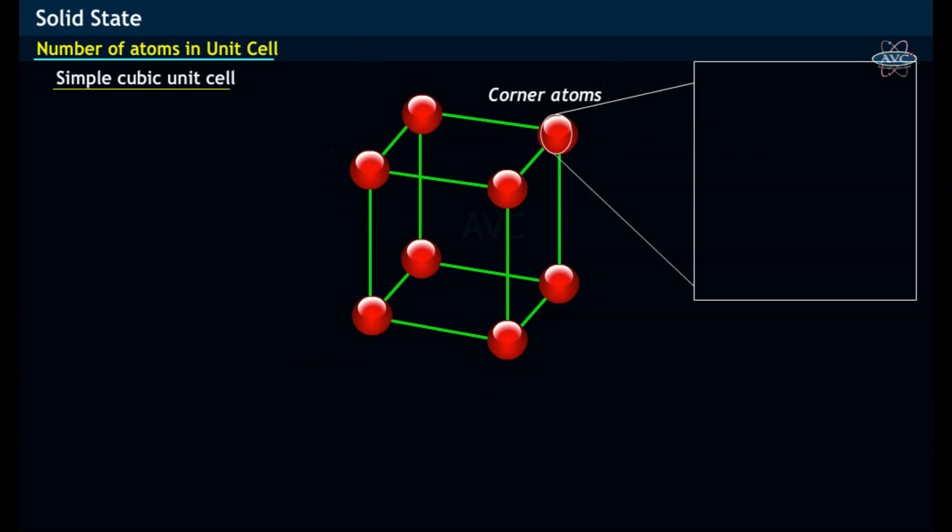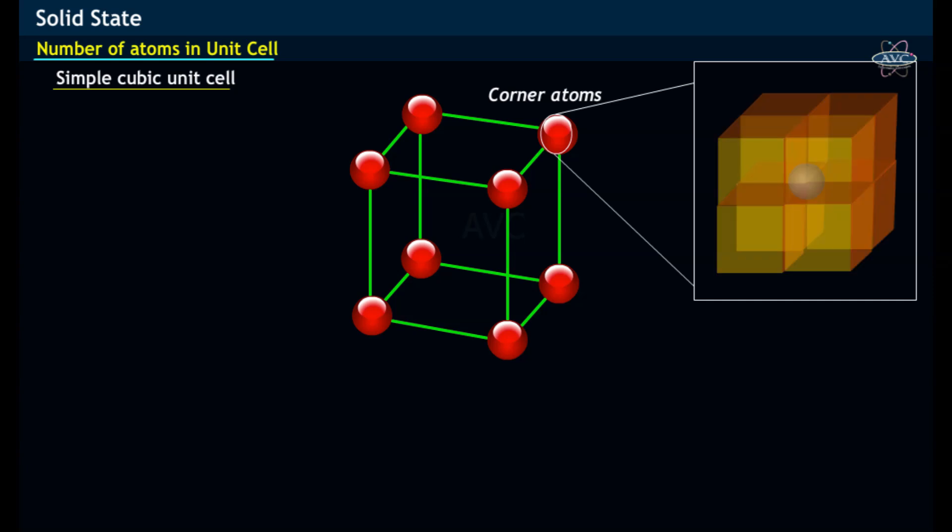Each corner of a simple cubic cell may be visualized as shown. Here it may be noticed that each corner atom is shared by eight other unit cells as shown.